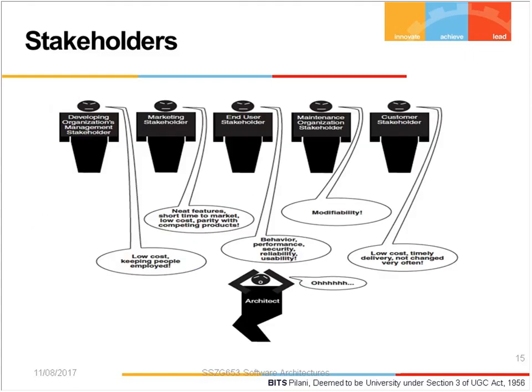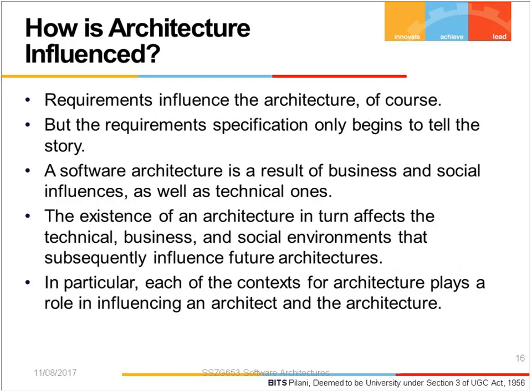This is a diagram from your textbook. Somebody is looking for modifiability, performance, security, reliability, usability. Somebody says the cost should be low. Somebody says the feature should be neat, user friendly. Somebody might even be saying there will be so much loss of employment - and this is the architect, tearing his hair apart, trying to figure out how to handle it all.